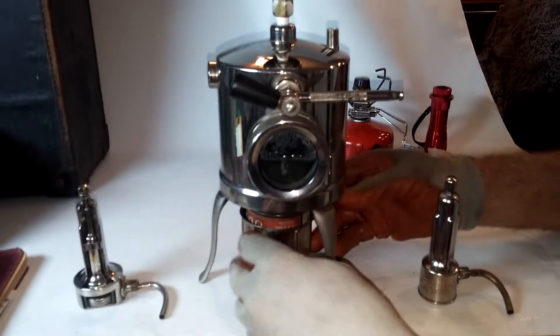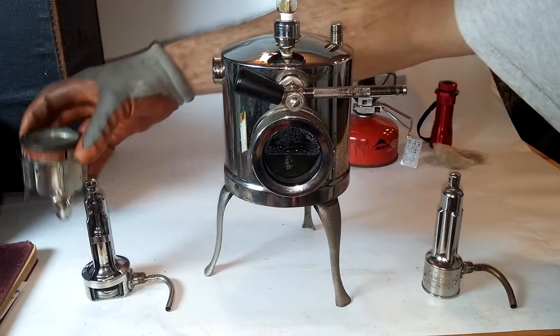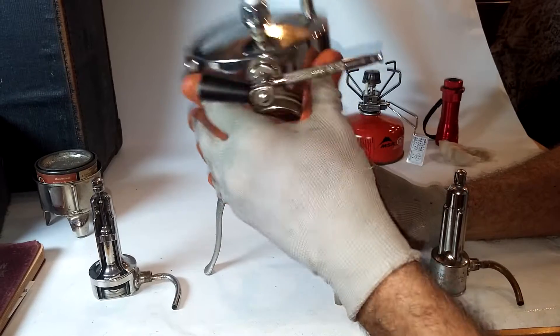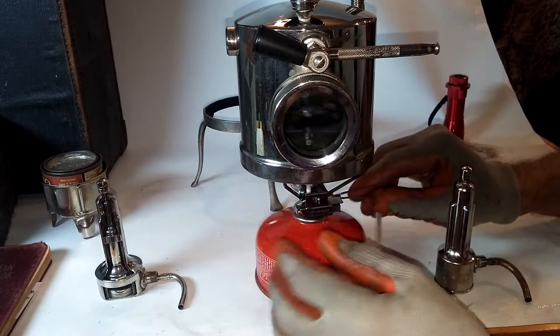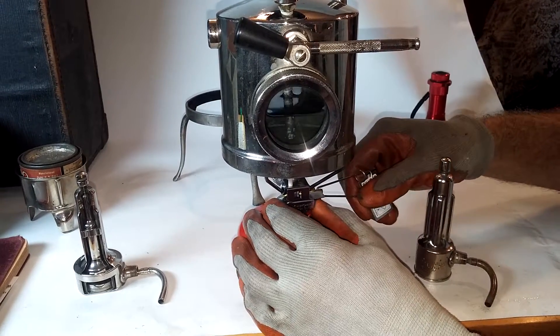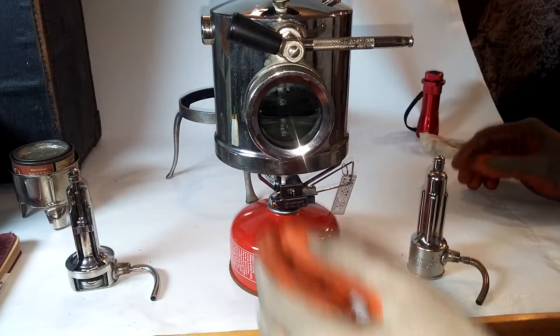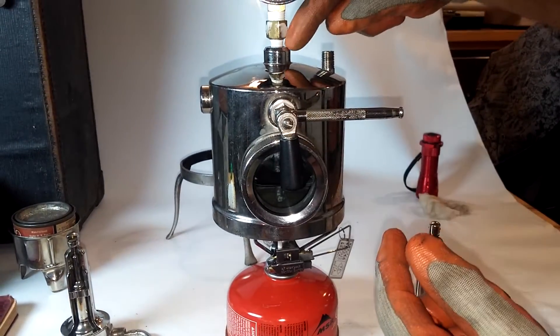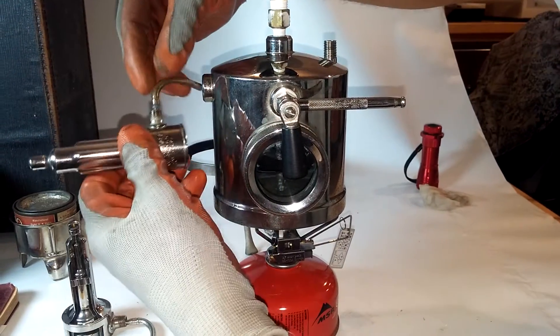This originally came with a sterno can. The sterno is old enough that it has patent dates on it from 1917, but in the interest of efficiency, we're going to use a camp stove. We have an open valve here, a siphon valve here, and this was for the thermometer.